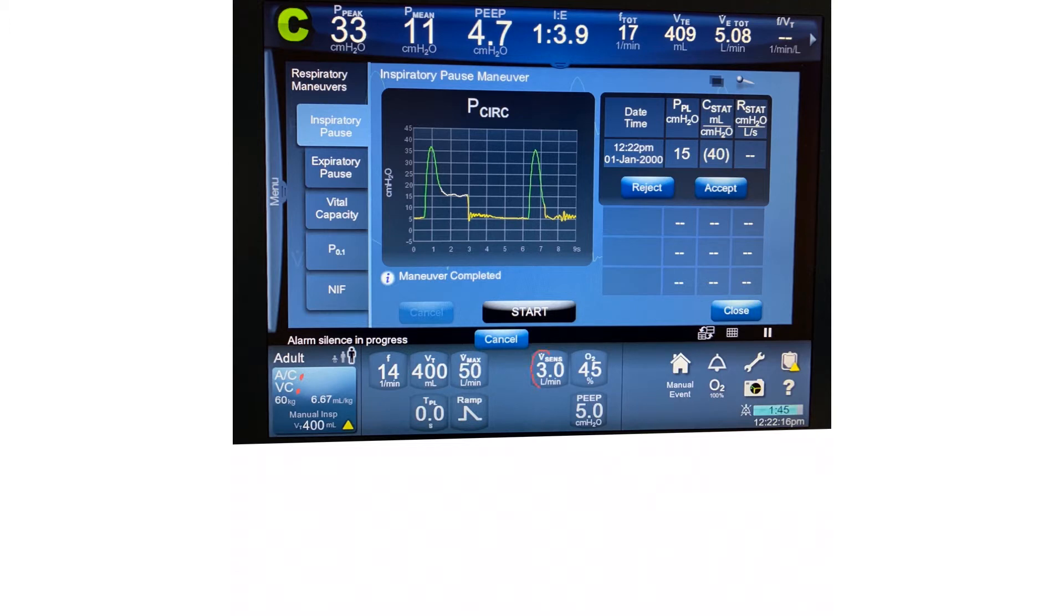Her respiratory rate was 14, tidal volume was properly set at 6.6 ml per kg of her ideal body weight, and the flow rate was 50 liters per minute, which was proper. The flow was delivered as a deceleration ramp.